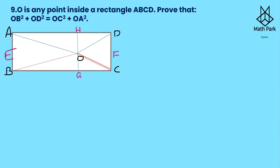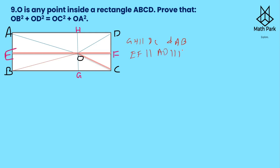Question number 9: O is any point inside rectangle ABCD. Prove that OB² + OD² = OC² + OA². This is true for any rectangle and any point taken. To prove this, we draw line GH parallel to DC and AB, and line EF parallel to AD and BC. This is our construction.